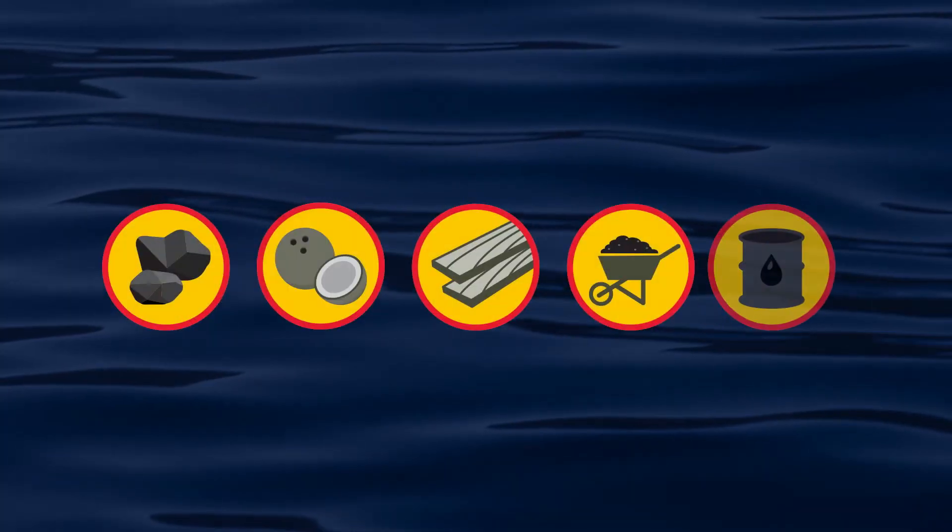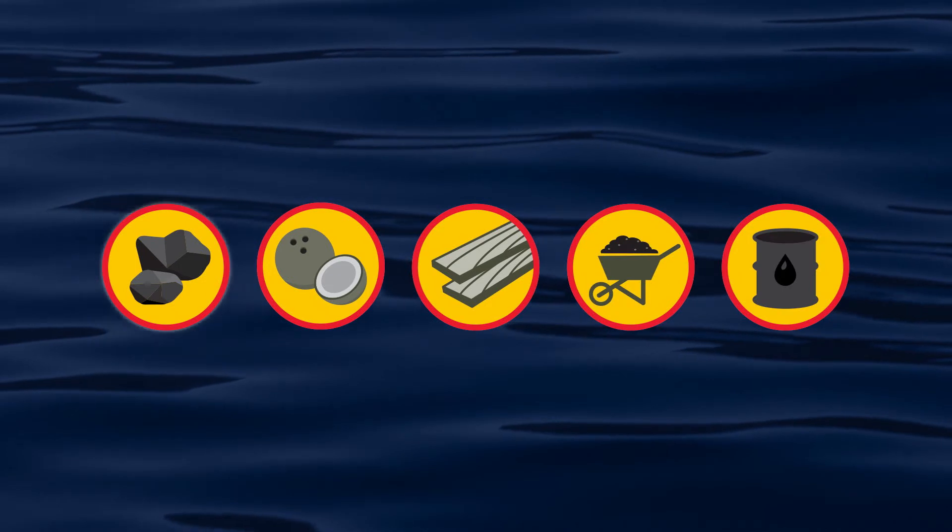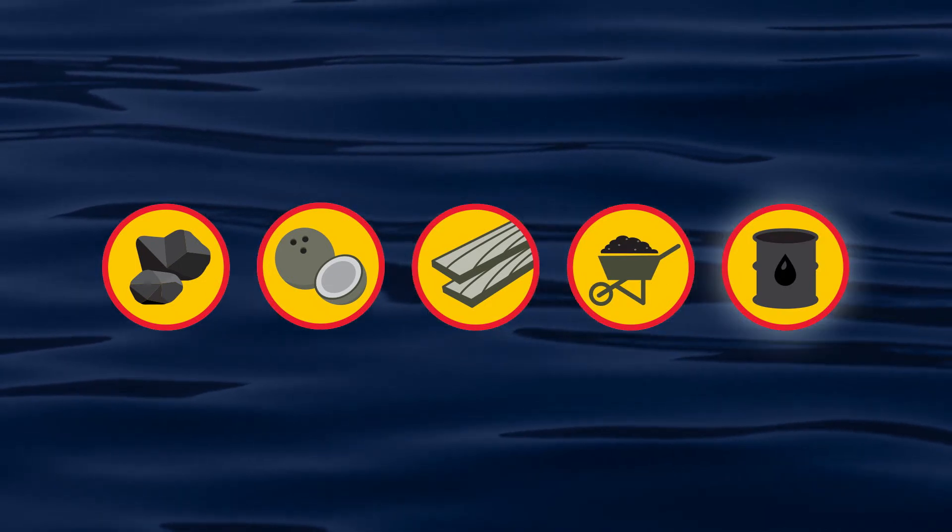Activated carbon comes from many substances, including coal, coconuts, wood, peat, and petroleum.